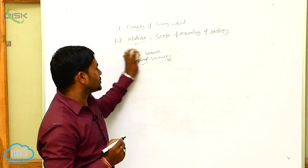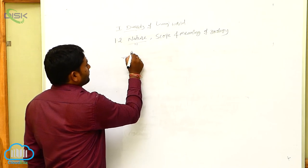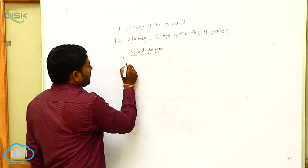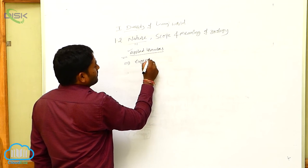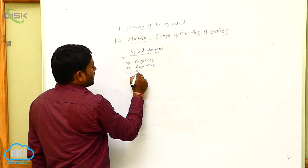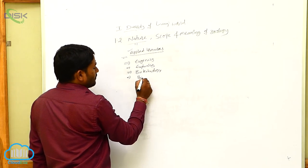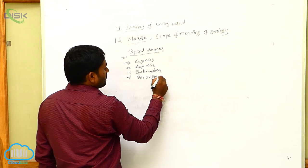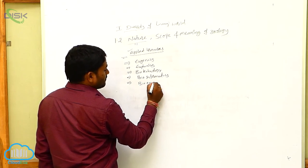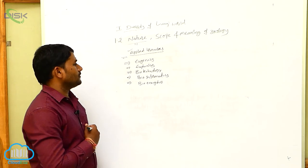Zoology has its scope in different types of applied branches. For example, the applied branches include Eugenics, Euthenics, Biotechnology, Bioinformatics, and these are all the applied branches of Zoology.